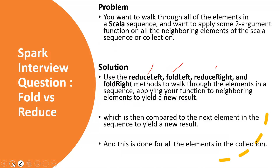The problem statement these APIs are trying to solve is that you want to iterate through all the elements in a particular Scala sequence or collection, and while iterating you want to apply some kind of function. That function can only be a two-argument function, which can be applied using fold or reduce, and it will work on all the neighboring elements of that collection.